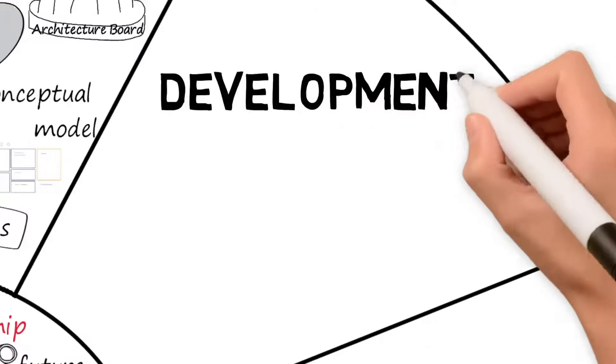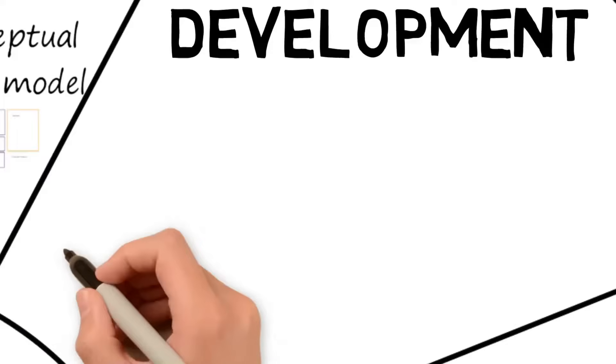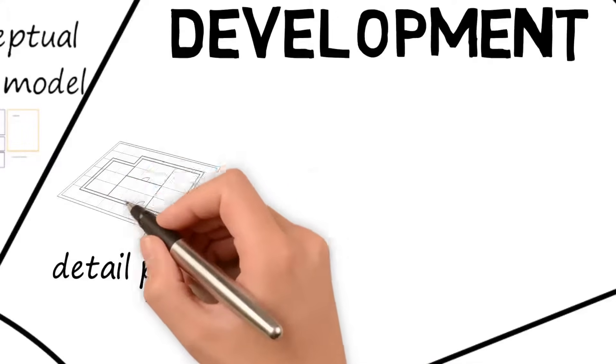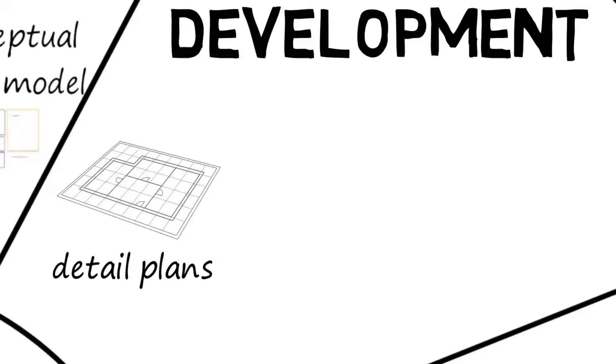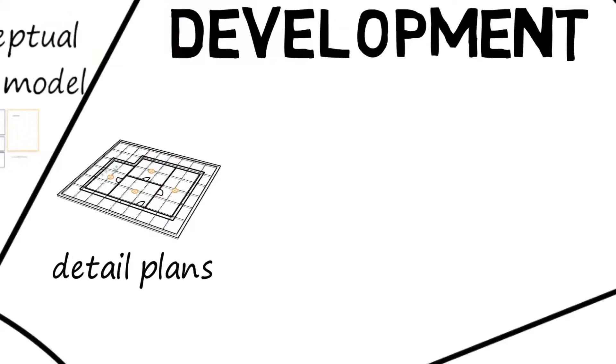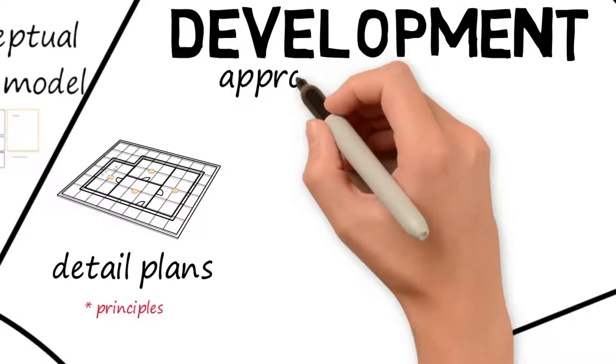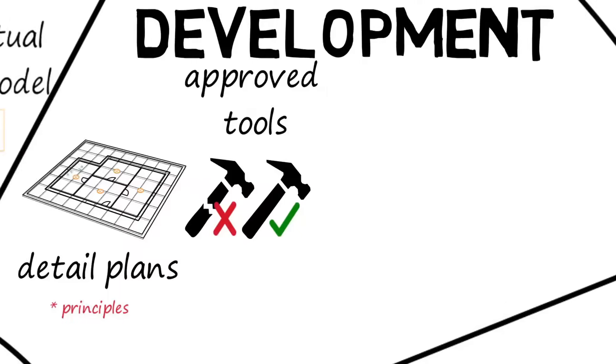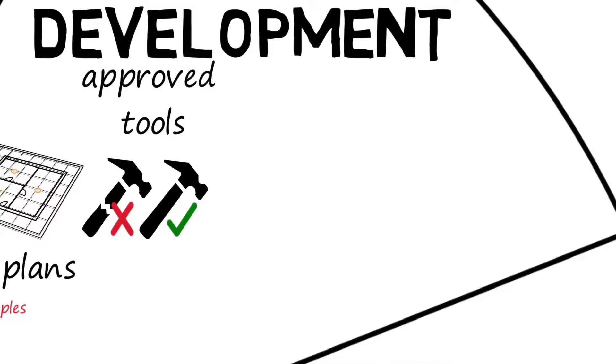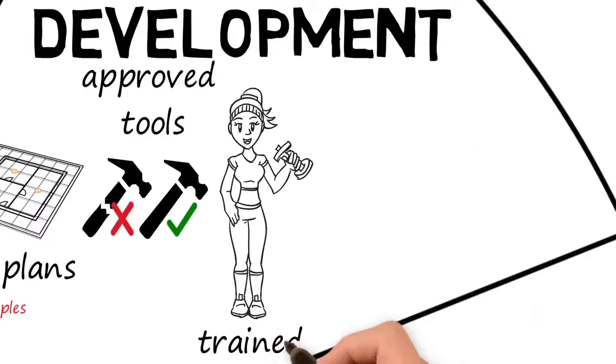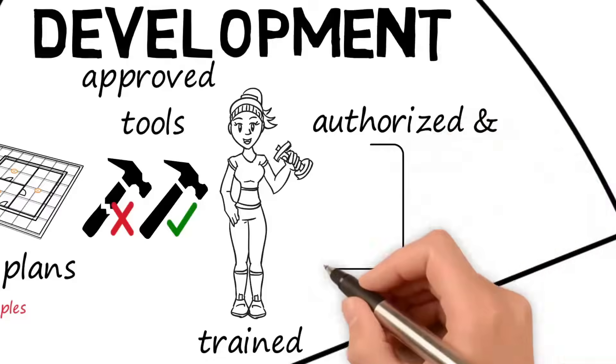To be able to begin their construction, the plumbers and electricians need detailed plans, like electricity or plumbing plans, and these need to be incorporated into the overall plan. In these detailed plans, but also during the construction, it's essential that the principles of building are taken into consideration. Additionally, everyone should work with the proper tools and replace and discard them when necessary. Each person is trained on how to use them and has the authorization for that specific type of work which needs to be done.